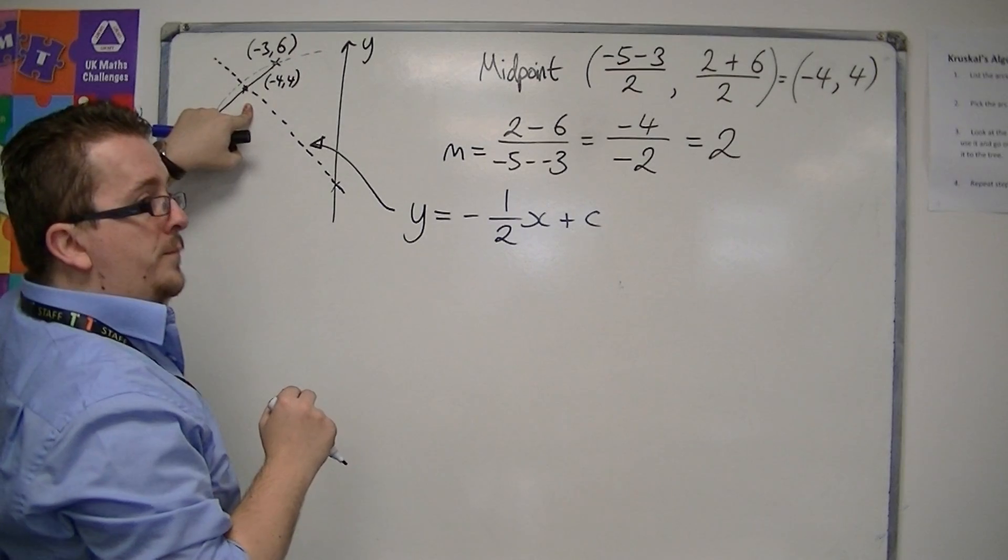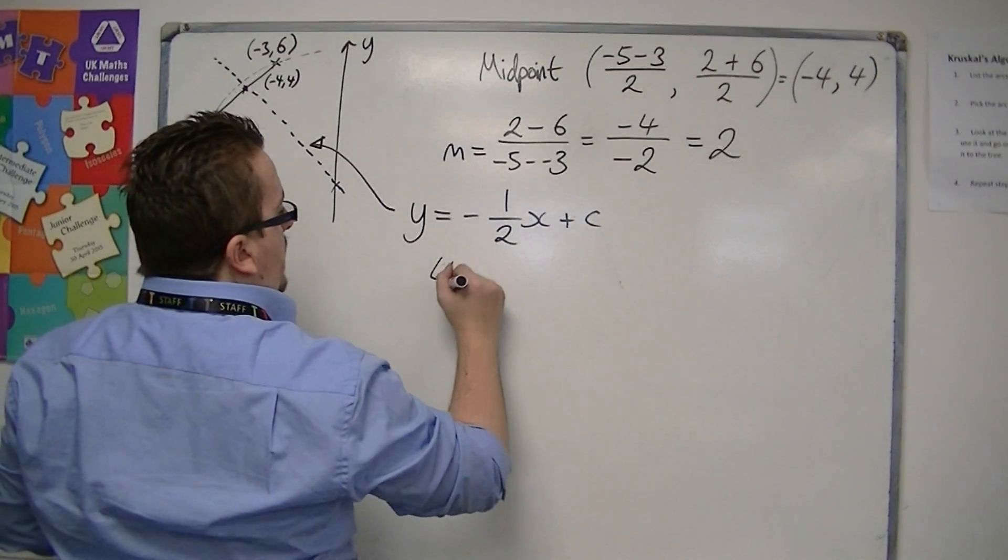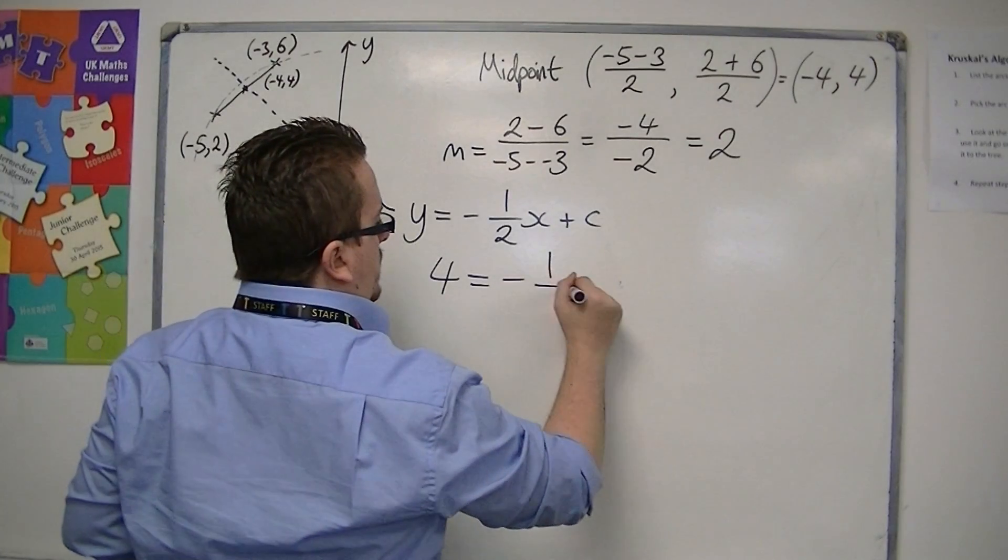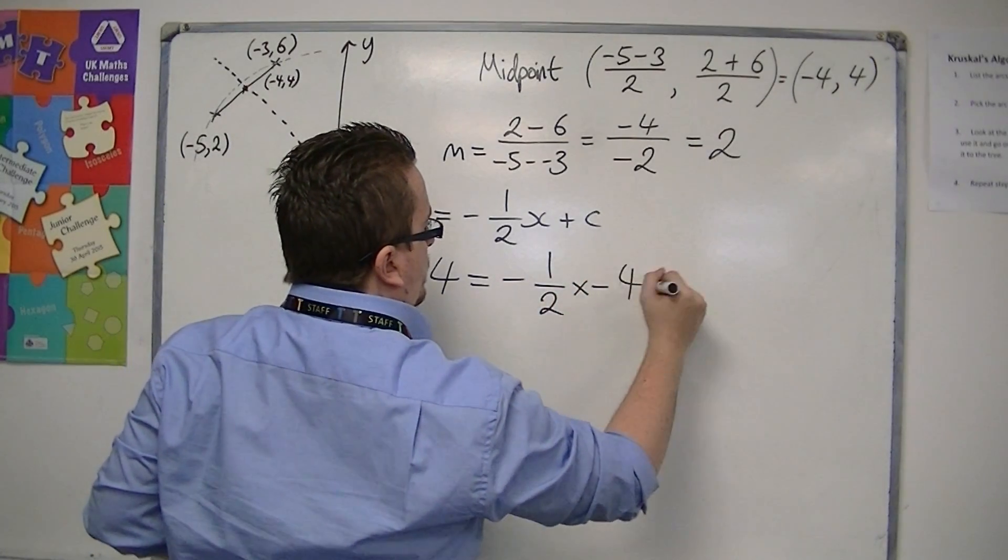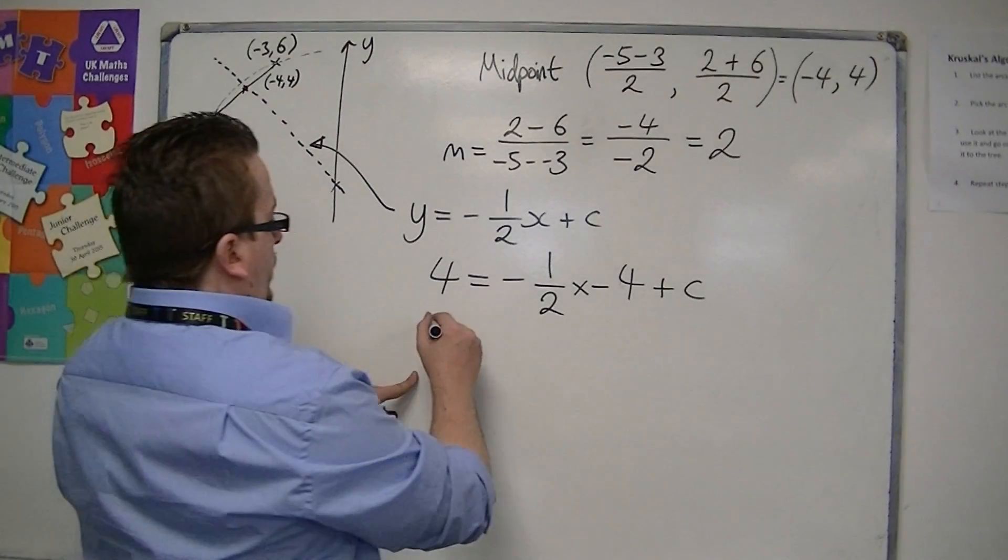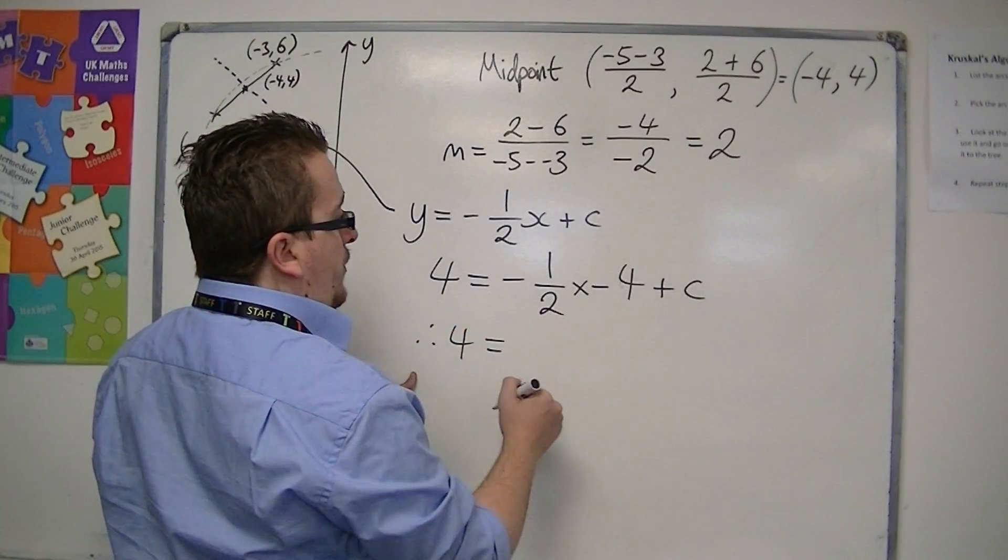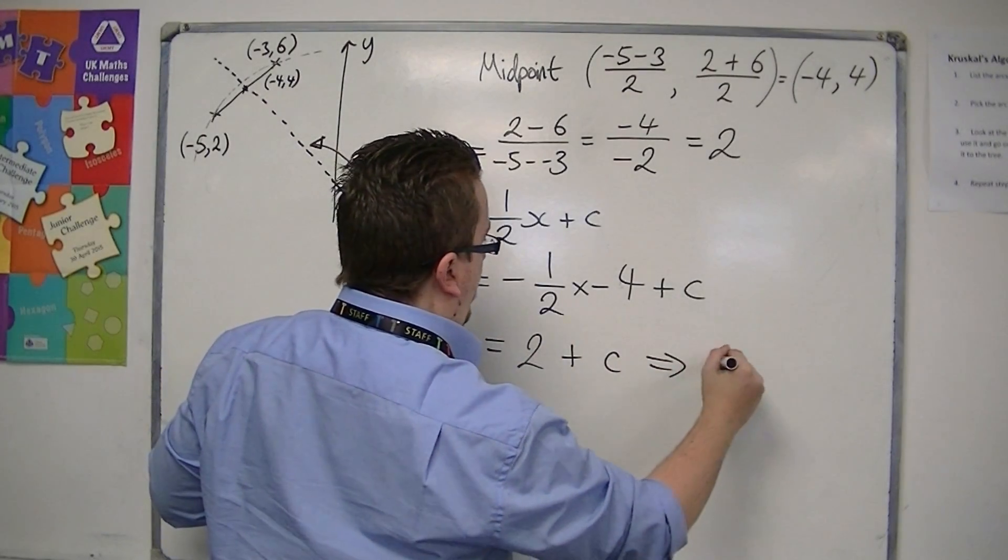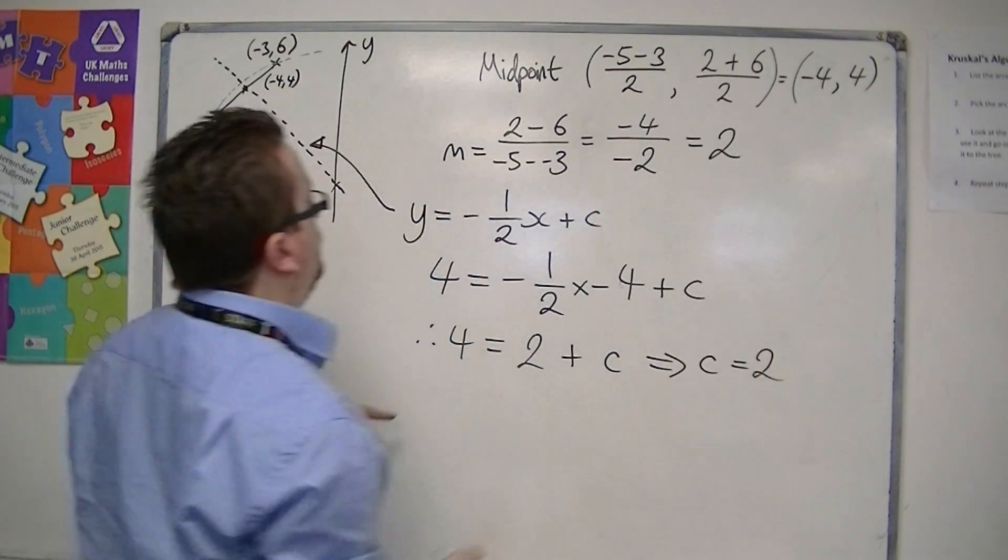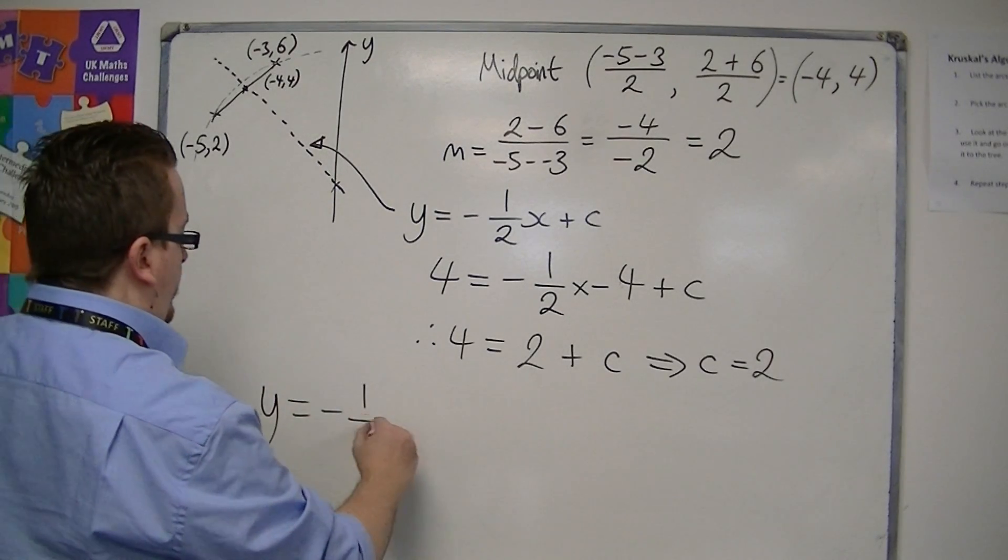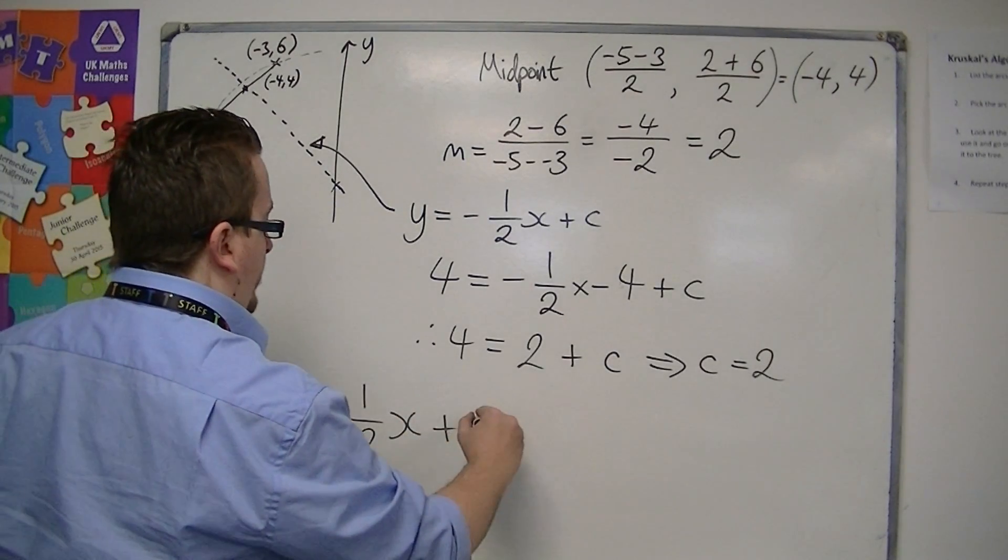And we need to work out the value of c by substituting in the coordinates of the midpoint, minus 4, 4. So when y is 4 and x is minus 4, what we have is 4 is equal to 2 plus c. So c must be equal to 2.